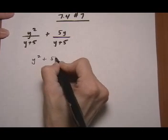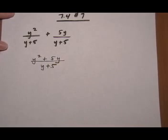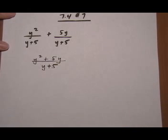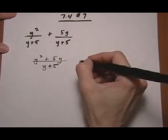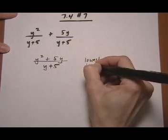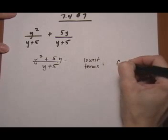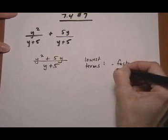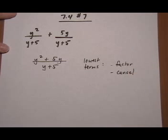Y squared plus 5y over y plus 5. Now we want to put it in lowest terms. And there's no combining like terms we can do, so we don't have to do anything there. But remember that lowest terms for rational expression means you want to first factor and then cancel. So we never want to cancel before we do our factoring.